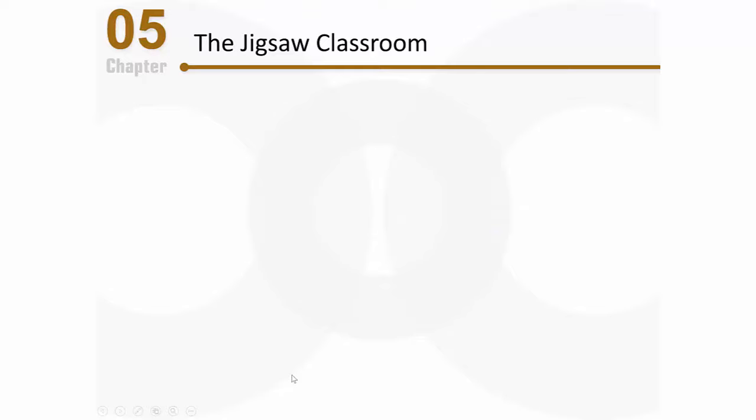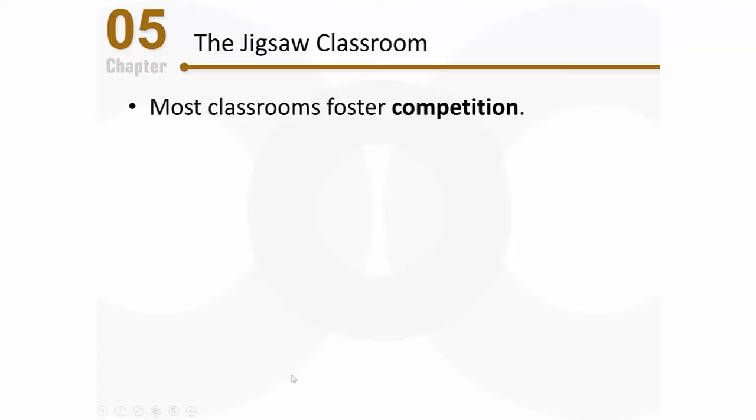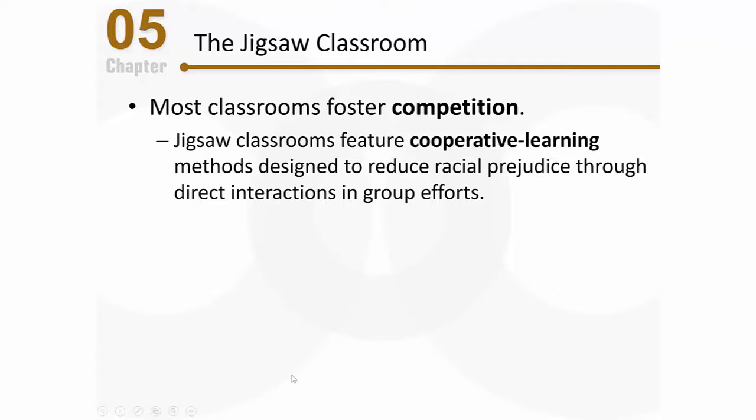Let's wrap up this discussion by talking about the Jigsaw Classroom, which is based on principles of intergroup contact. If you think about most classrooms, they foster competition, and we know that competition between groups tends to breed hostility. The Jigsaw Classroom is different — it features a cooperative learning environment, and the method used is designed to reduce racial prejudice through direct interactions in group efforts. Essentially, kids come together in small groups and teach each other material, relying on one another in a group effort to learn. In a Jigsaw Classroom, the kids need to rely on each other to learn the material.